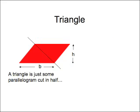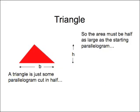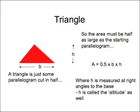The triangle is essentially a parallelogram cut in half. So logically, the formula is area equals half times the base times the height. Again, the height must be measured at right angles to the base. Some of the older textbooks refer to the height as the altitude of the triangle.